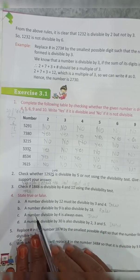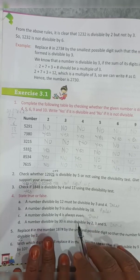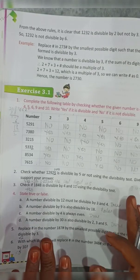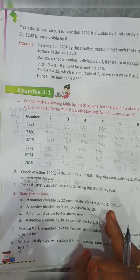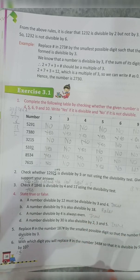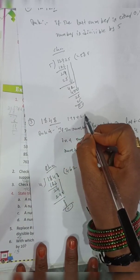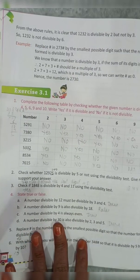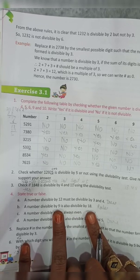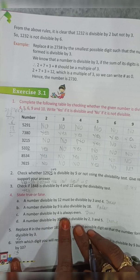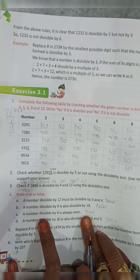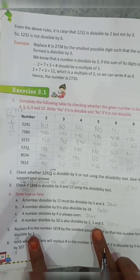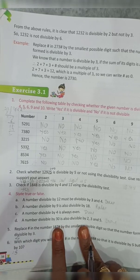Next: a number divisible by 9 is also divisible by 18 — this is false. The divisibility rule of 9 says the sum of digits must be divisible by 9, but the rule of 9 does not automatically apply to 18. Next: a number divisible by 4 is always even — this is true. And: a number divisible by 30 is also divisible by 2, 3, and 5 — this is true, as that is the divisibility rule of 30.